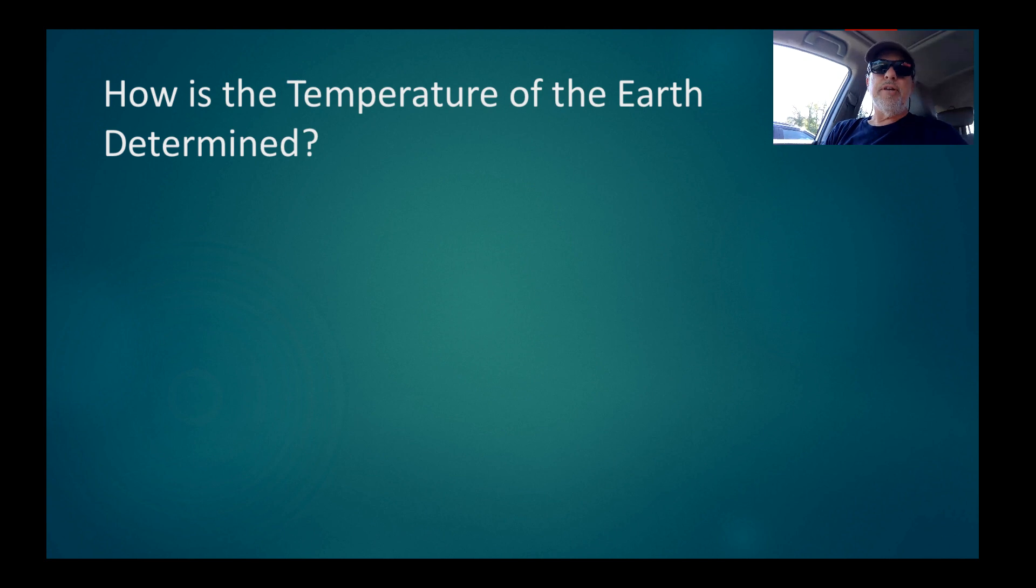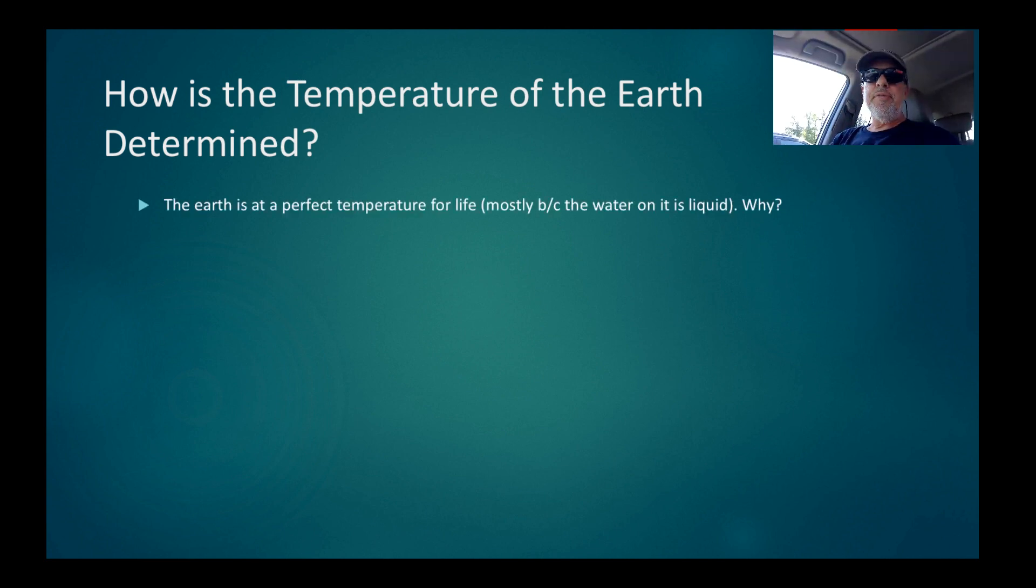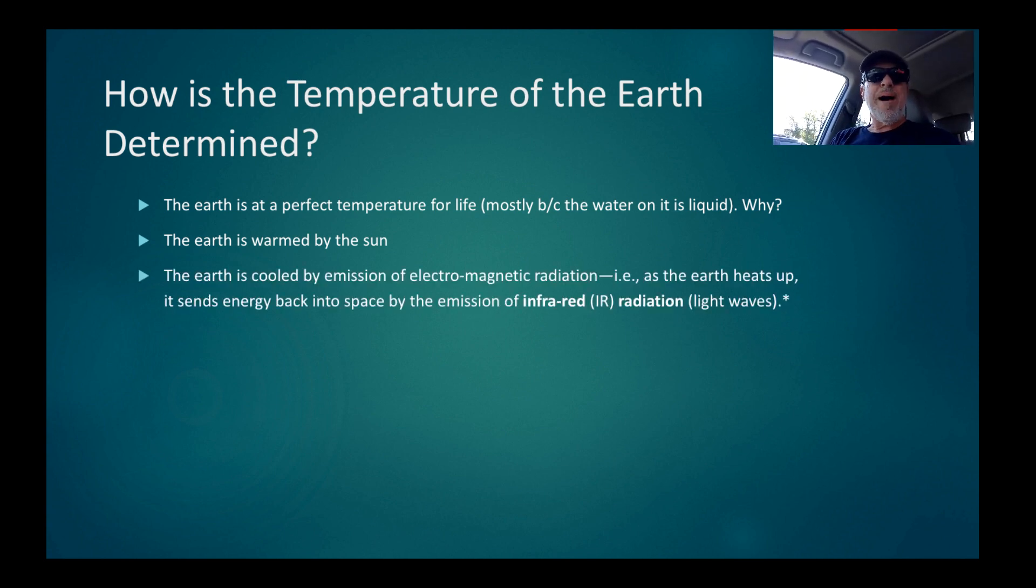Let's go a little bit deeper into how the temperature of the Earth is determined. First thing we have to say, the Earth is at a perfect temperature for life. It's mostly because the water on Earth is mostly in a liquid state. Here are the two processes of physicists you need to know about: the Earth is warmed by the sun, but the Earth is cooled by emission of its own radiation, its own electromagnetic radiation, back into space.